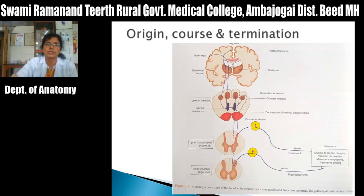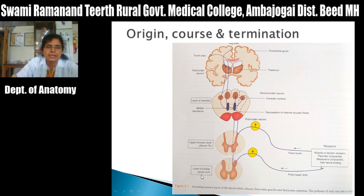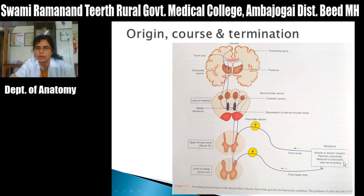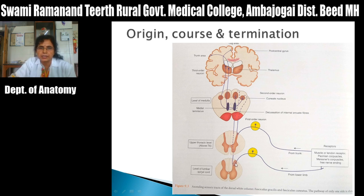Now the origin, course, and termination of this tract. From the lower lumbar segment, the peripheral processes of the dorsal root ganglia carry sensations from peripheral receptors — muscle spindle, Golgi tendon organ, Pacinian corpuscles, Meissner's corpuscles. These sensations are carried through the central processes to the spinal cord through the dorsal root. These first order neuron processes ascend upward without relay in the posterior horn, traveling through the posterior funiculus as fasciculus gracilis.